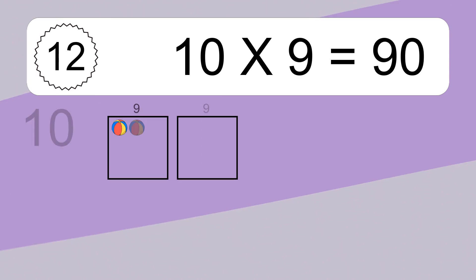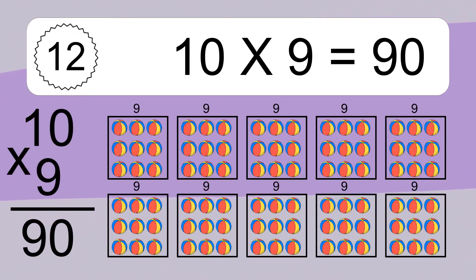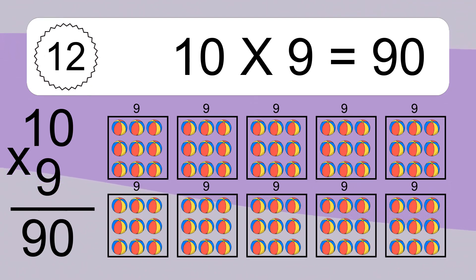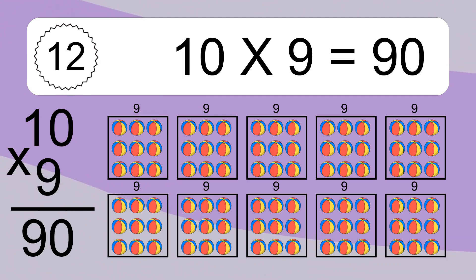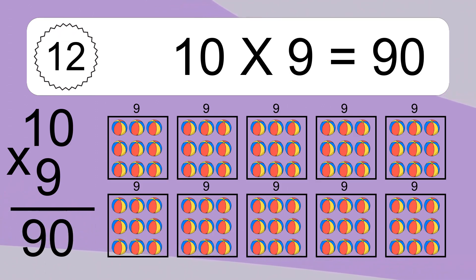10 times 9 equals what? 10 times 9 equals 90. We have 10 boxes, and each box has 9 colorful balls inside. If you count all the balls in all the boxes together, you will have 10 times 9 balls. This equals 90 balls.